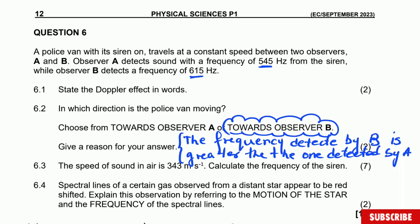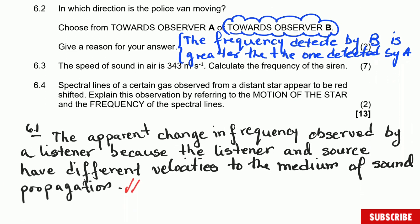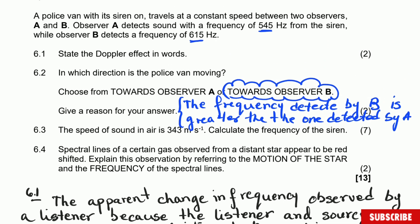Note the following: this is really simple. If you state the definition, which you have to learn, you already have two marks out of 13. And for this part, you get one mark for saying towards observer B and one for saying that the frequency detected by B is greater than A. That's another two marks — you're already at four out of 13.